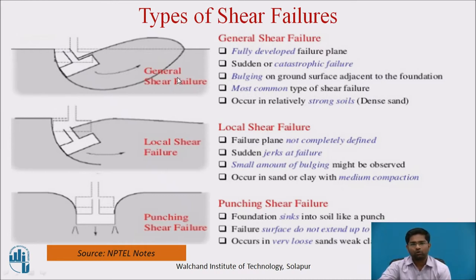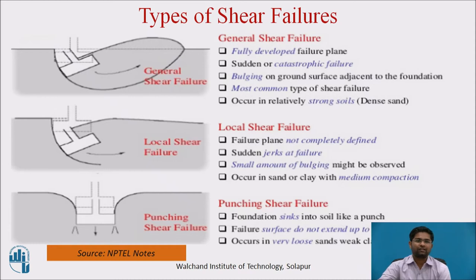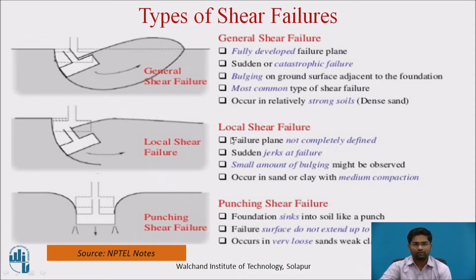General shear failure also occurs in relatively strong soil samples. It means if the phi value — the angle of shear resistance — is greater than 36 degrees, then this condition of shear failure occurs in the soil.